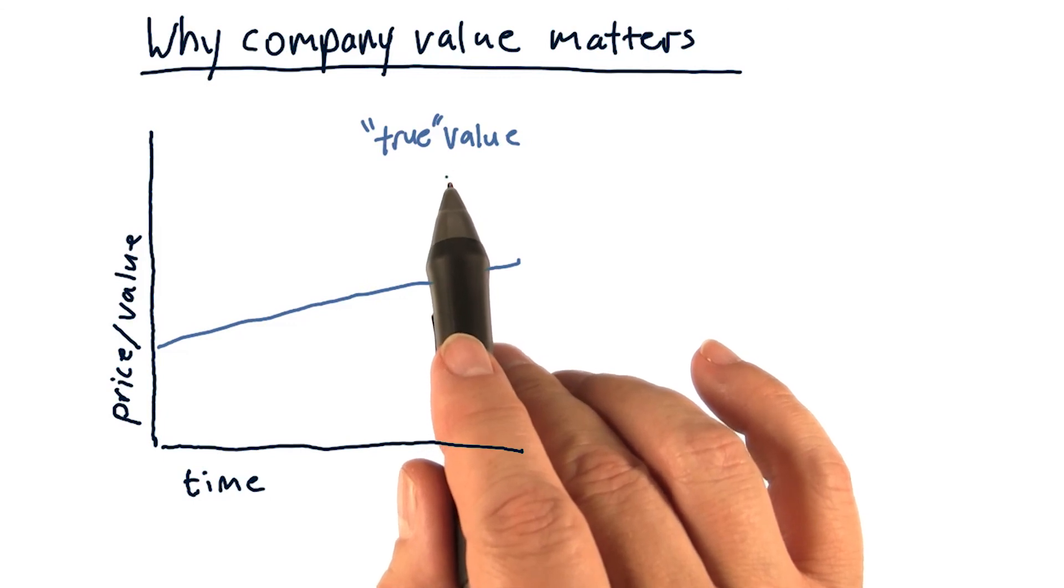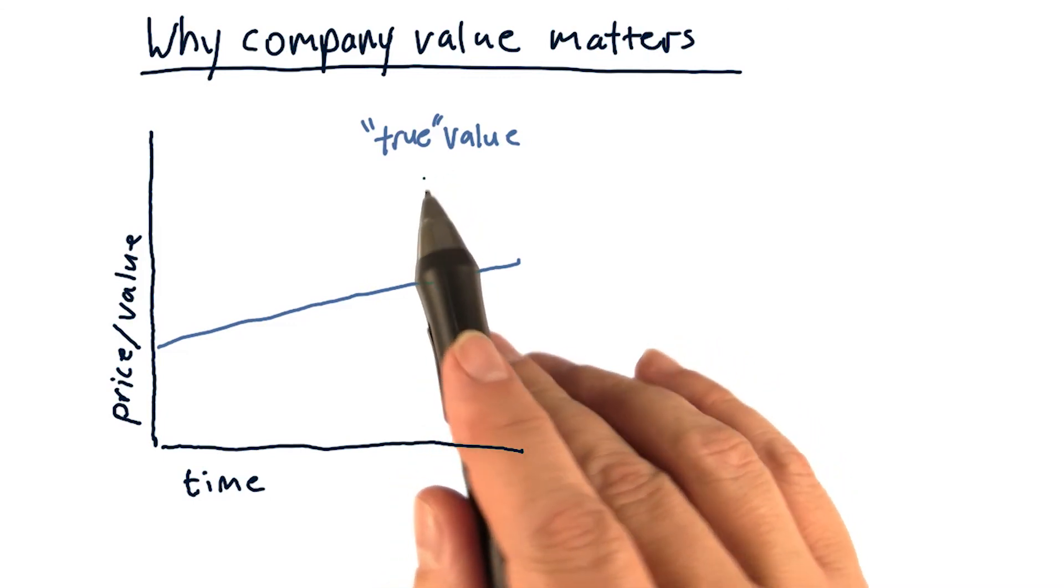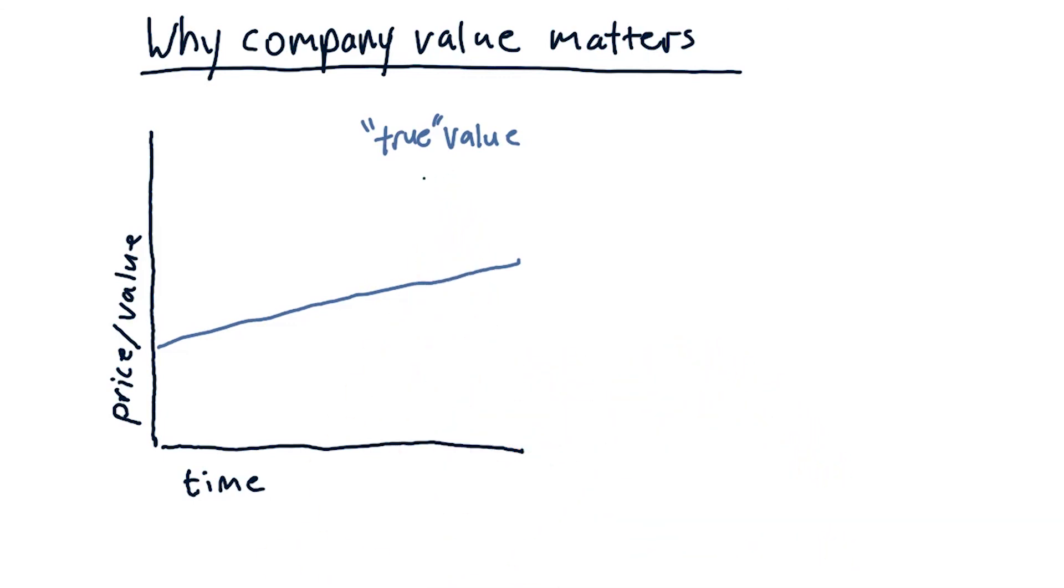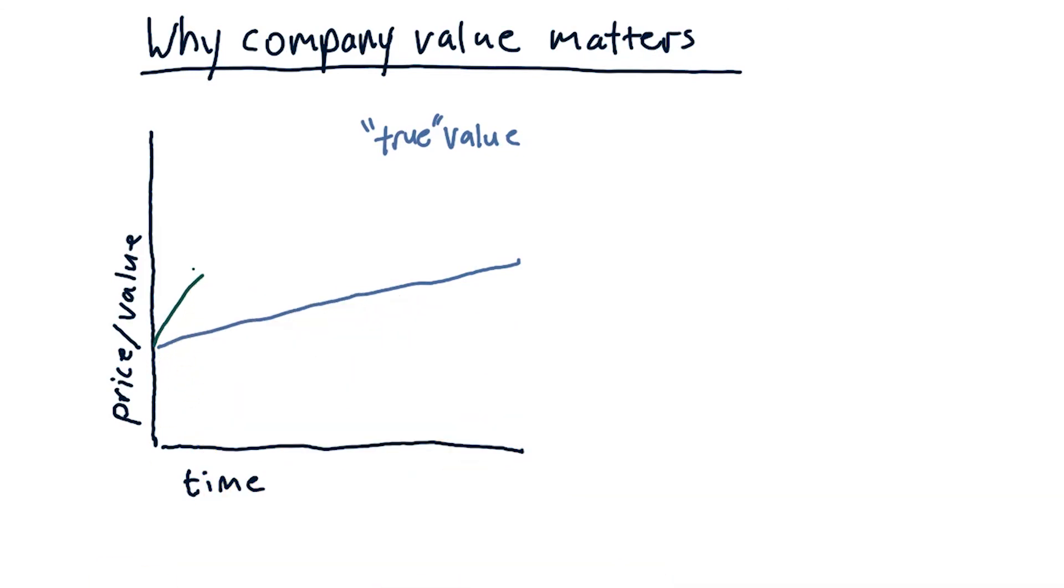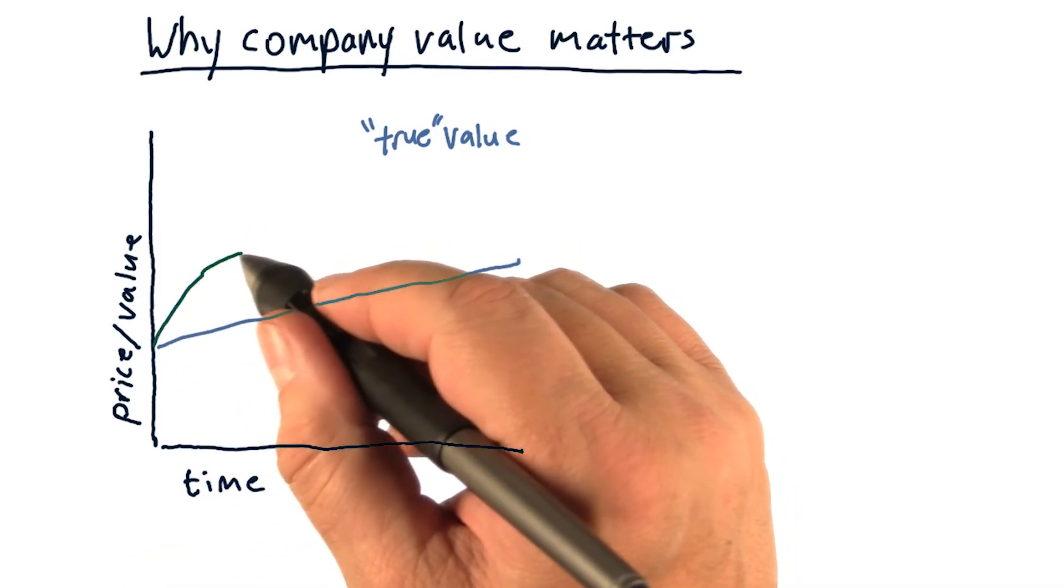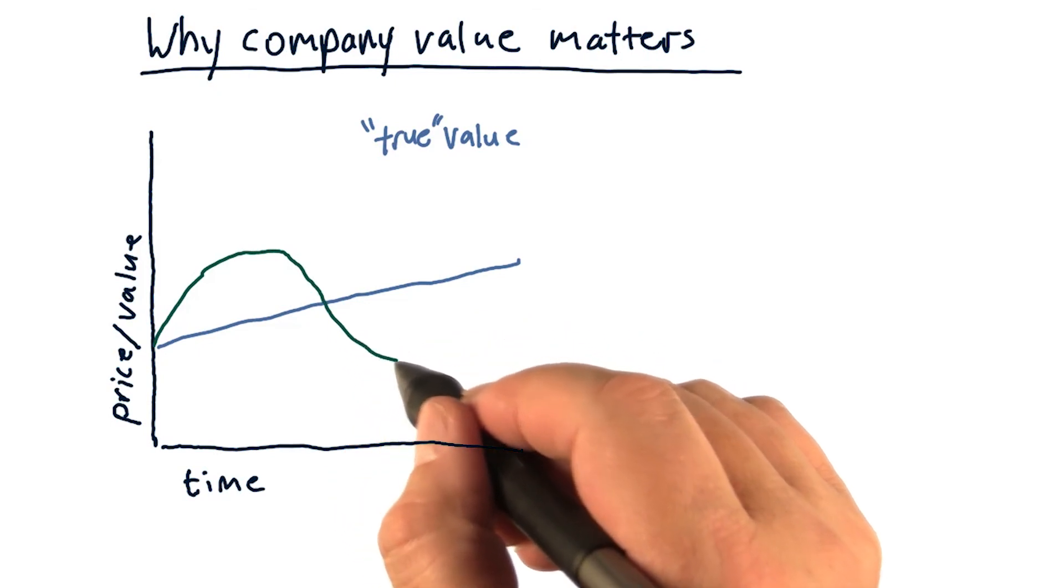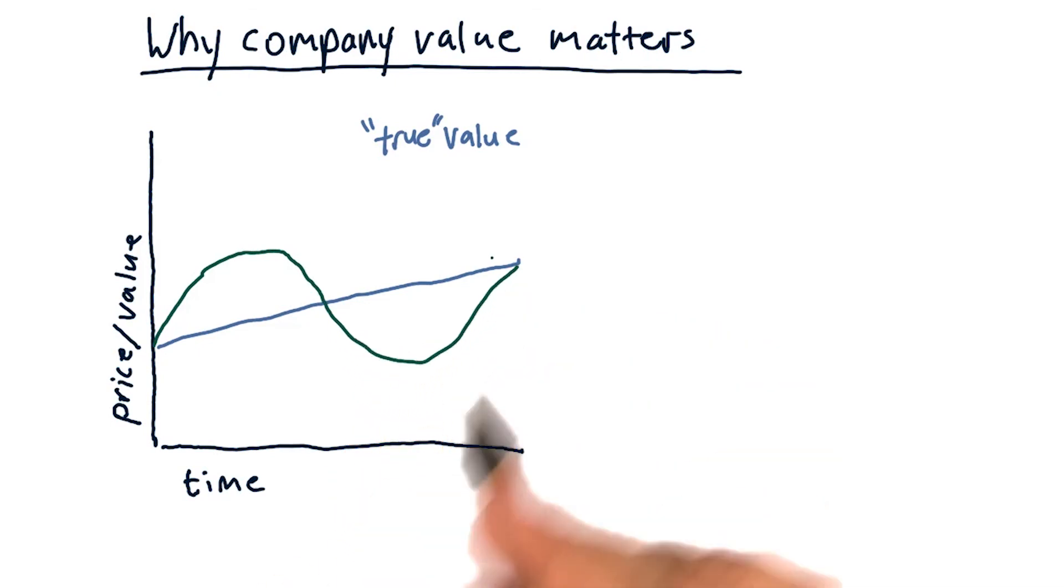Now, that true value is distinct and different from the value estimated by the market—in other words, what price the stock market says it's worth. On one particular day, maybe the price is higher than the true value. On some other day, maybe it's lower, and on some other day, it's the same.